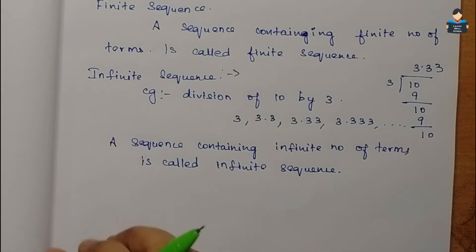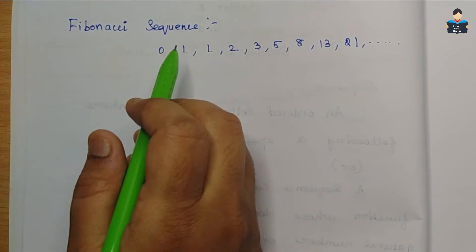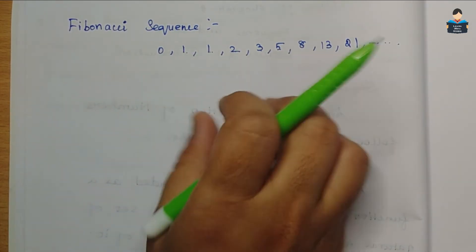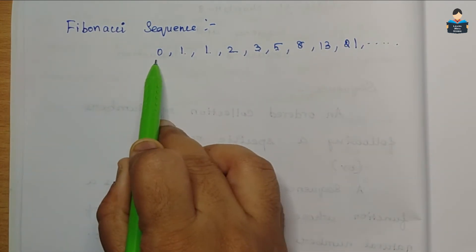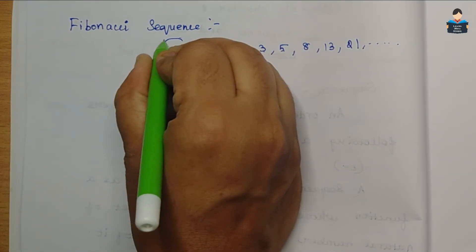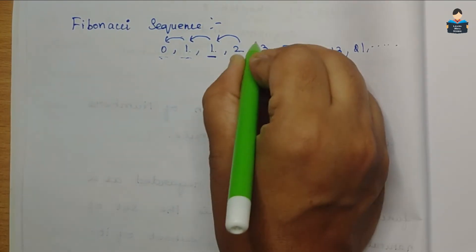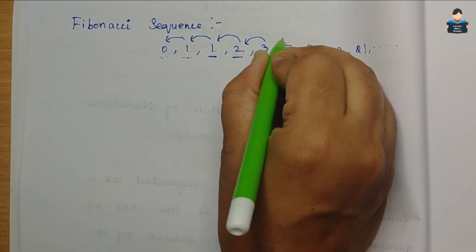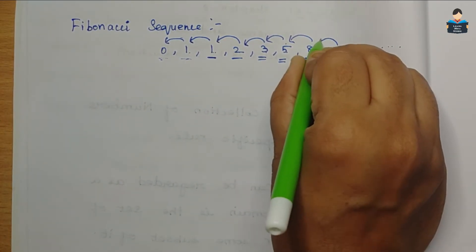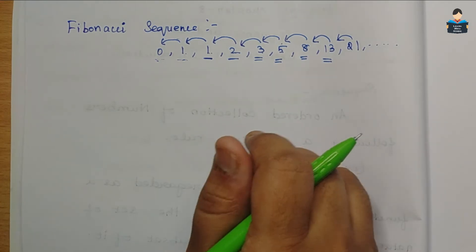Another example is the Fibonacci sequence — a very important sequence. The Fibonacci sequence does not follow a visible arithmetic pattern. The first two terms are 0 and 1. Then: 1+1=2, 2+1=3, 3+2=5, 5+3=8, 8+5=13, 13+8=21, and so on.